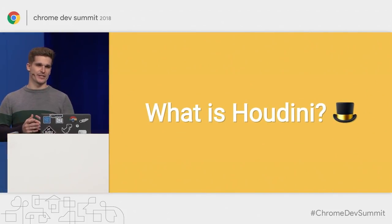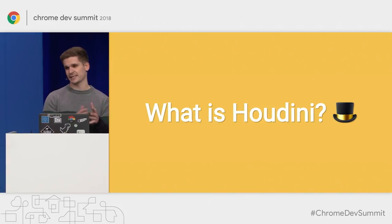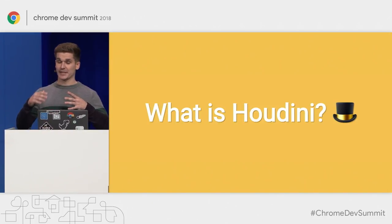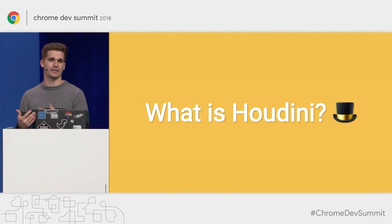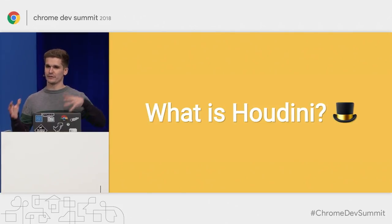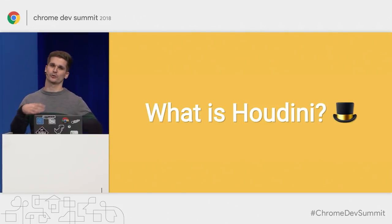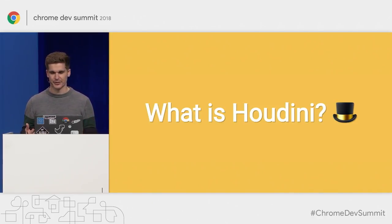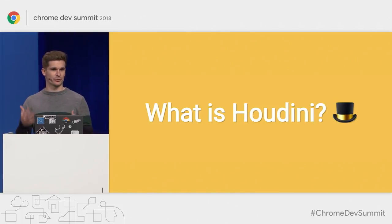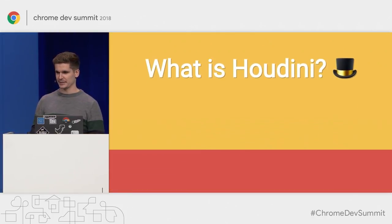Bringing it back to the question: what really is Houdini? Houdini is a standards effort in the CSS working group in the W3C to expose hooks into these major stages of the rendering pipeline to the developer — to you. So you have more control, not only over the visuals, but to write better polyfills and have more control over how your page appears to the user. It is hard, because these four stages are different in every browser, sometimes even parallel or not clearly separated. But we're working with all the browsers to make sure everybody can implement these APIs.